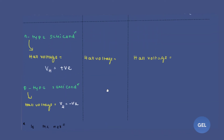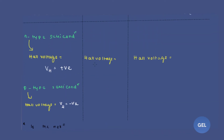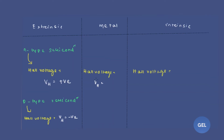For metal, this is important for your exam. Always remember — pause this video and think about it — the Hall voltage value for metal will be 0V. You will be surprised: Hall voltage for metal will be zero.